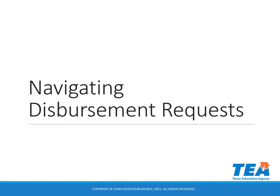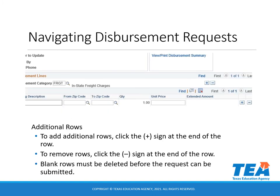Navigating Disbursement Requests. Additional rows are required when you have more than one ISBN that you are entering a request for. The only times you can have multiple items on one row is if you are requesting funds for a package, bundle, science materials, or multiple novels. To add additional rows, click the plus sign at the end of the row. To remove rows, click the minus sign at the end of the row. Blank rows must be deleted before the request can be submitted.